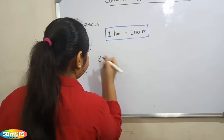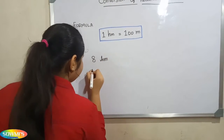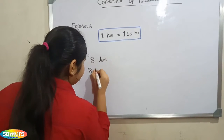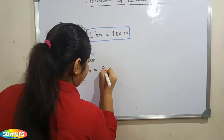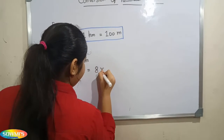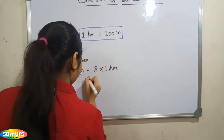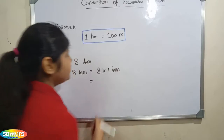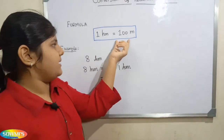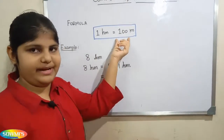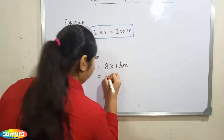For example, 8 hectometer. 8 hectometer is equal to 8 multiplied by 1 hectometer. Now we have to substitute 100 meter in the place of 1 hectometer.